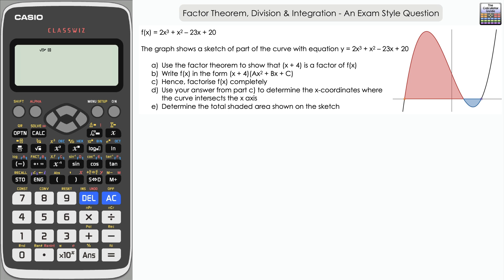We've got f(x) at the top, and on the right a graph showing a sketch of part of the curve. Part A: use factor theorem to show that x+4 is a factor of f(x). Part B: write f(x) in the form of that factor times a quotient. Part C: hence factorize f(x) completely. Part D: determine the x-coordinates where the curve intersects the x-axis. Part E: determine the total shaded area - a red area and a blue area combined.